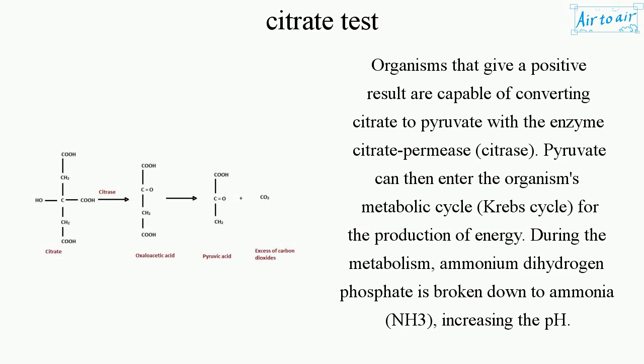During the metabolism, ammonium dihydrogen phosphate is broken down to ammonia (NH3), increasing the pH.